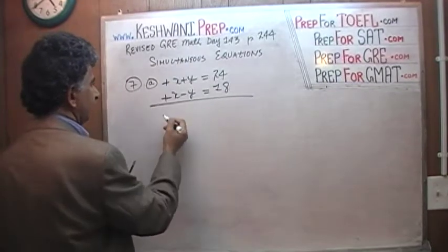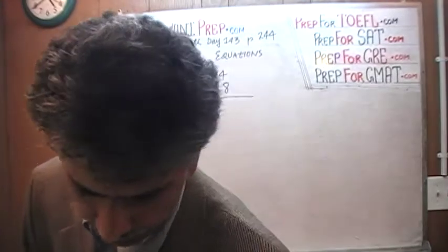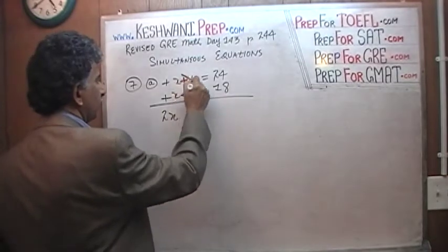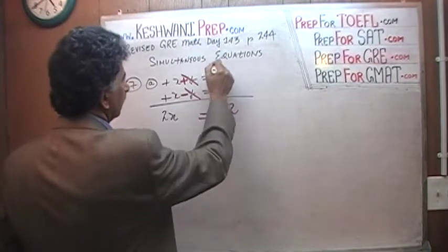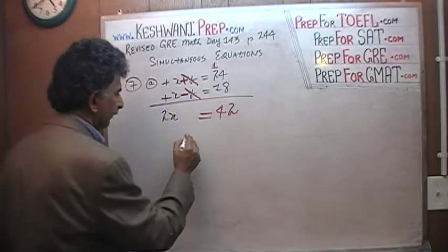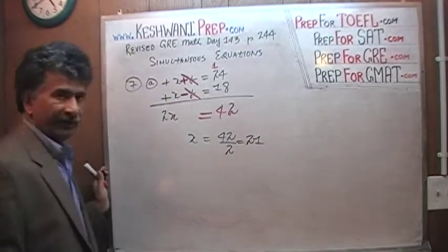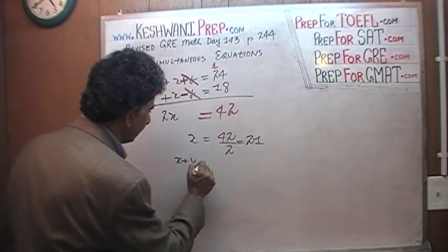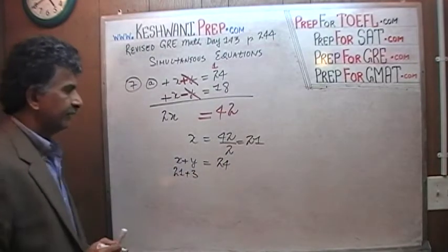We add the two equations. Plus x and plus x gives us 2x. A positive y and a negative y drop out, and we end up with 2x equals 24 plus 18, which is 42. Therefore x equals 42 over 2, which is 21. Now if x is 21, from the equation x plus y equals 24, y must be 3. That's your answer.